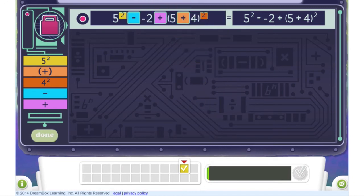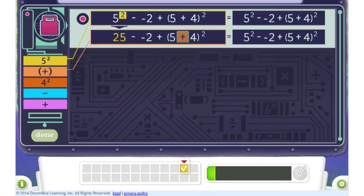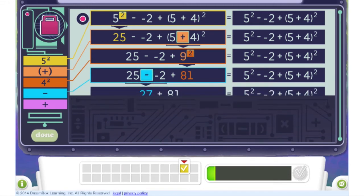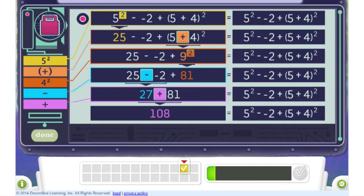Once a valid order is chosen, the student sees the expression on the control panel simplify, step by step, in the order she chose. And finally, the lock is opened.